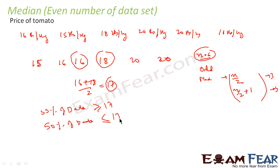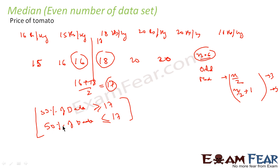That is also true — if you place 17 in the data, 3 values are less than 17 and 3 values are more than 17. So from the median we get the conclusion that 50% of the data is less than the median and 50% of the data is greater than the median.